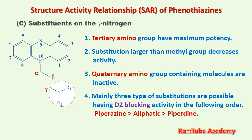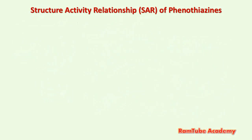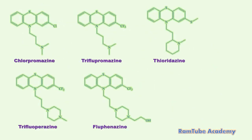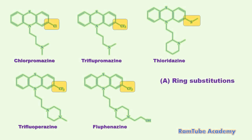Now it's time to discuss the SAR with actual structures of drug molecules. Here you can see a few phenothiazine molecules already covered in the classification. The first site for structural modifications is the phenothiazine ring — as per SAR, an electron-withdrawing group must be present at the second position on the ring, which is confirmed by the presence of electron-withdrawing groups at position 2 in all the molecules.